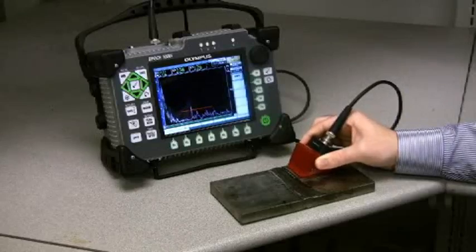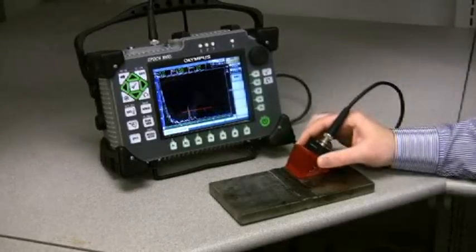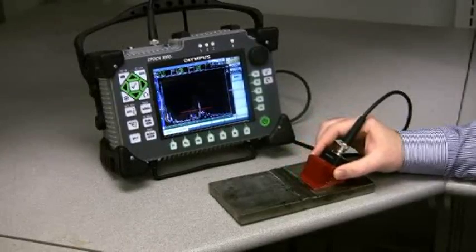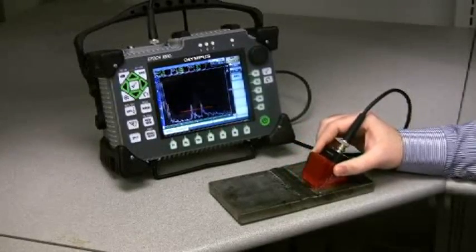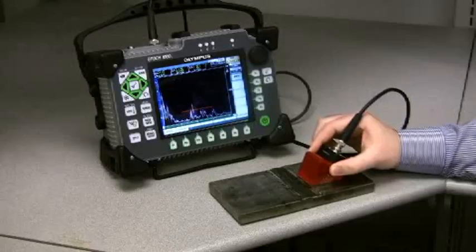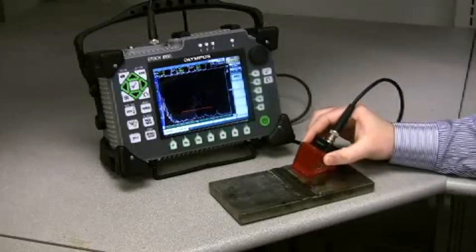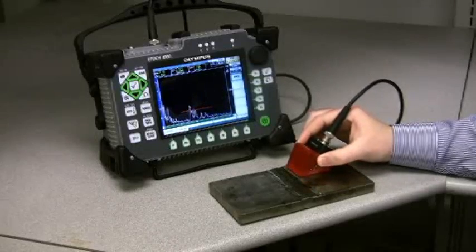When using lower frequency probes, such as the 2.25 MHz AWS probe, Olympus NDT has developed improved square wave pulsar technology, which delivers more energy to the transducer while maintaining better near surface resolution.